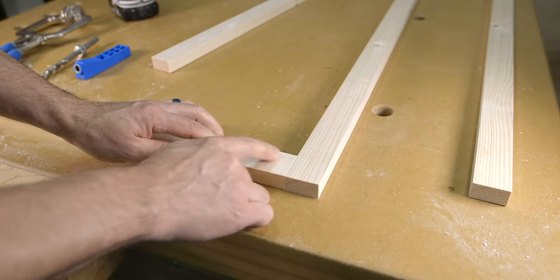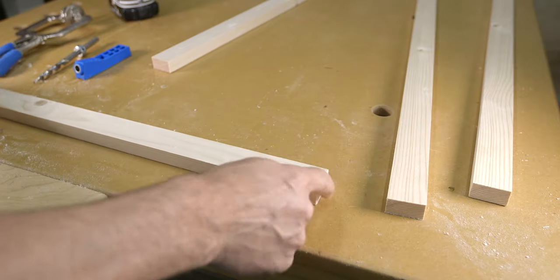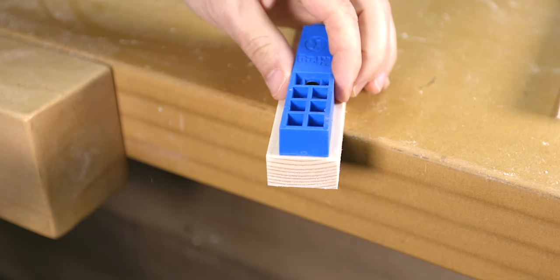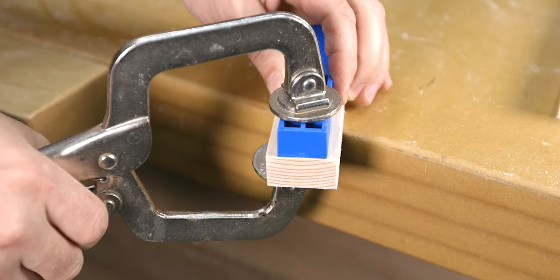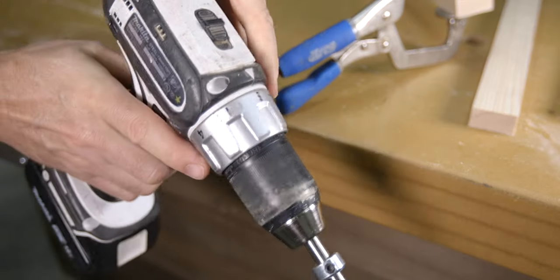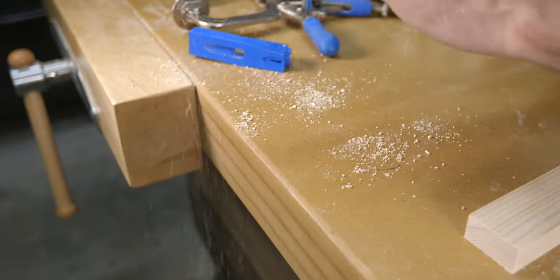Because the rails fit between the styles, the pocket holes will only need to be drilled in the rails, one on each end. To do that, locate the jig in the center of the rail flush to the end and clamp it in place. With the bit chucked up in the drill and the drill set to the drill setting, drill your first hole. Remove the clamp and repeat this process three more times.